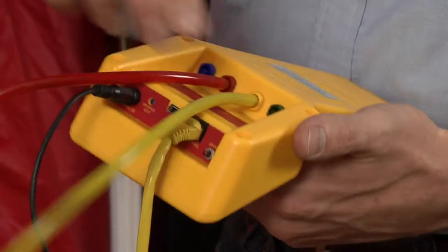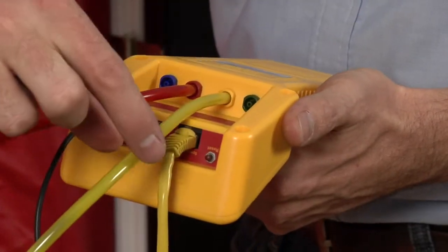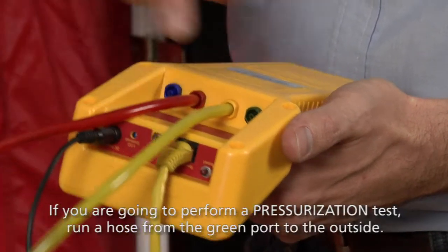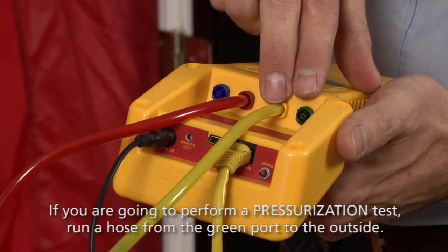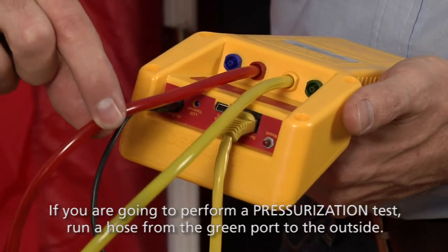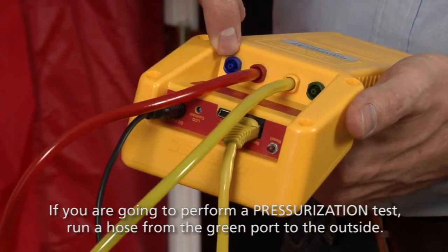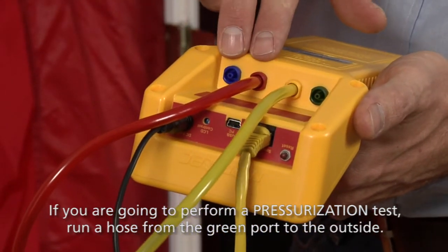The gauge compares the outlet fan pressure to the inlet fan pressure and shows us the pressure difference. It also measures the outside pressure compared to the inside pressure and shows us the difference there.